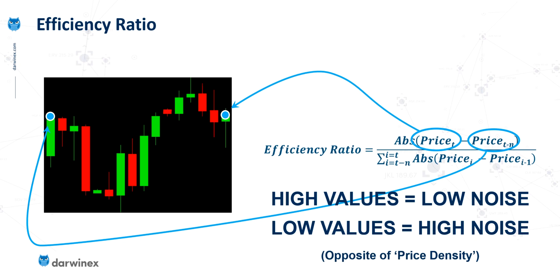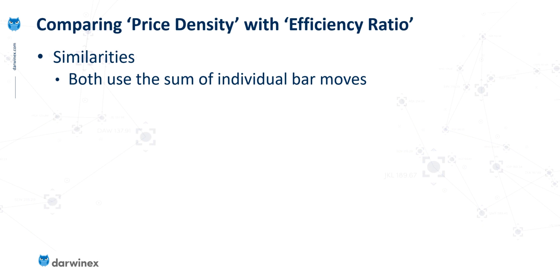So this is the exact opposite interpretation that we would use with price density. So let's now compare these two methods. In terms of similarities, both of them use the sum of individual bar moves. They do it slightly differently. So price density looks at the high and low of individual bars, whereas the efficiency ratio looks at the move from one close to another. But both of these components are effectively doing a similar thing.